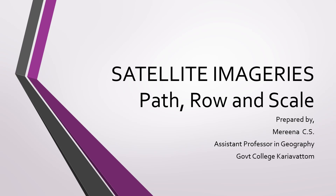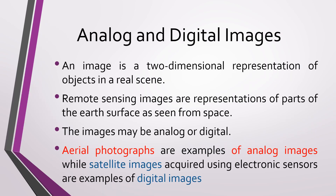Hello. In this section we are discussing about the various aspects of satellite imageries — analog and digital images. An image is a two-dimensional representation of objects in a real scene.